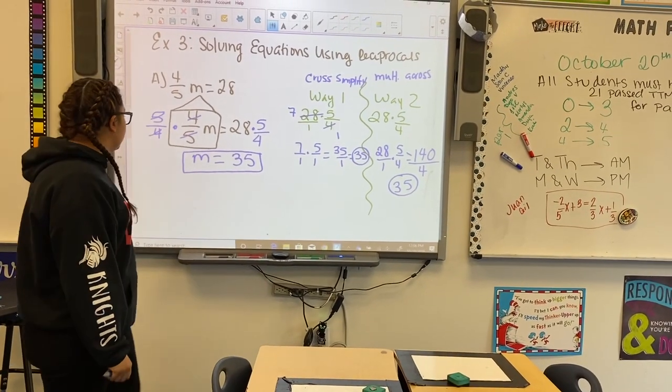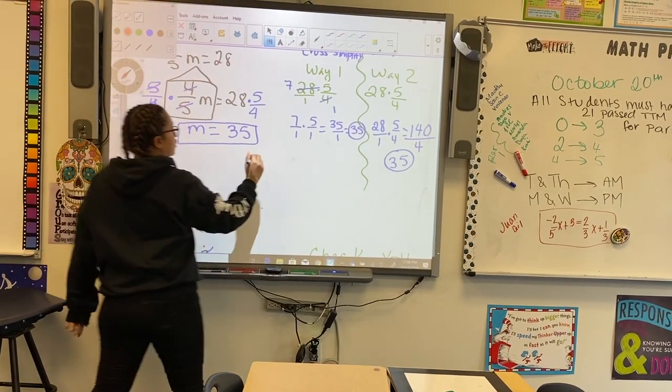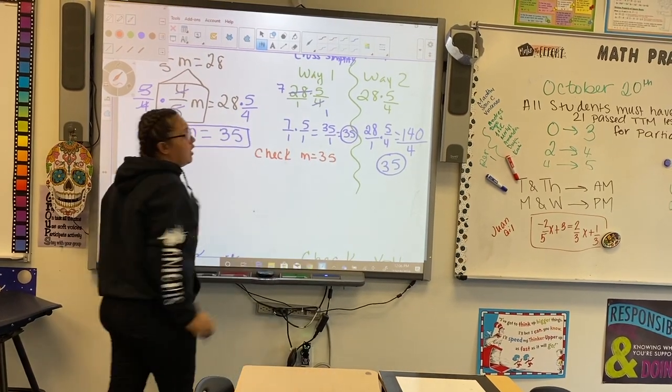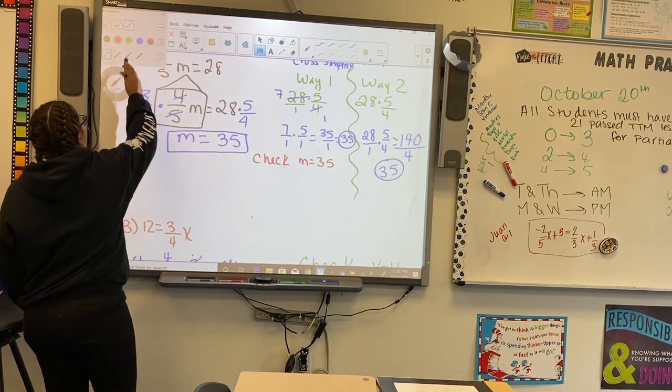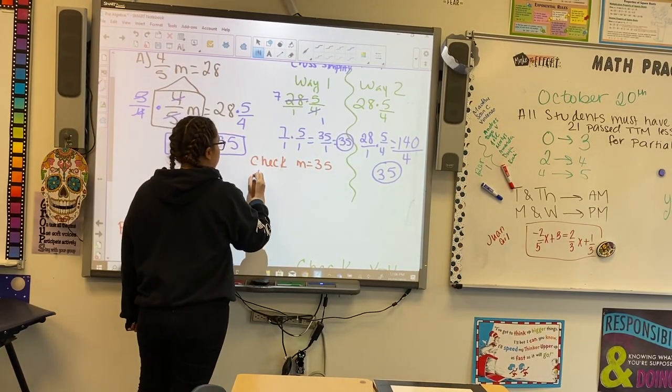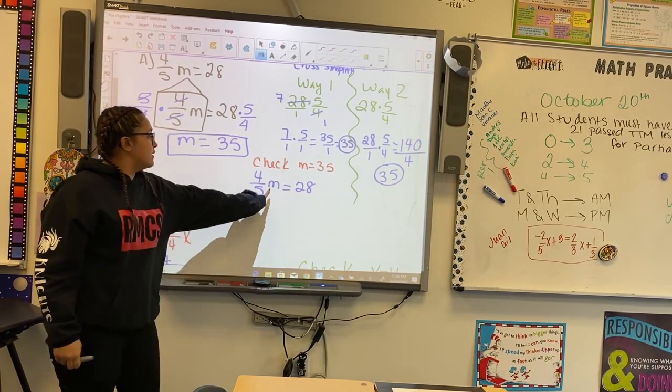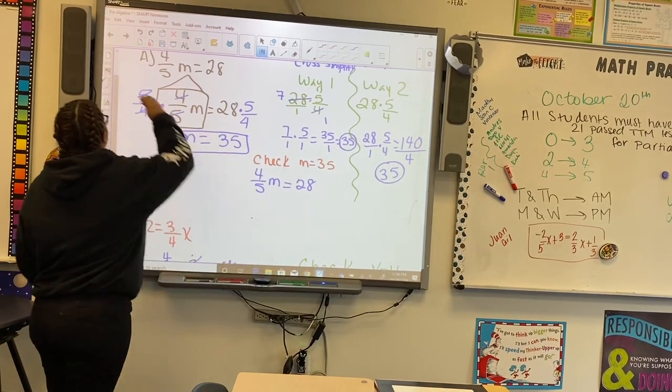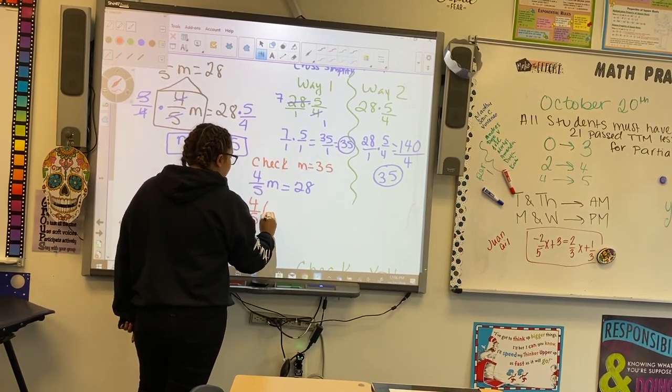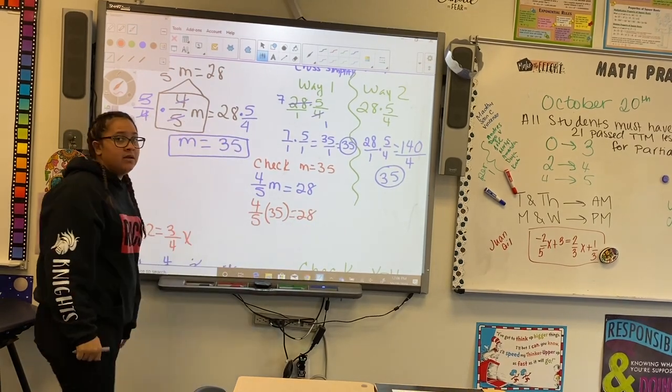Now, I know that some of you are having difficulty checking, so I will do that with you right now. We are going to check that m equals 35. Same thing. We're going to rewrite our original problem, which was 4 over 5m equals 28. Wherever I see my m, I'm going to plug in 35. So, 4 over 5 times 35 equals 28. Now, again, we have two ways of doing this.